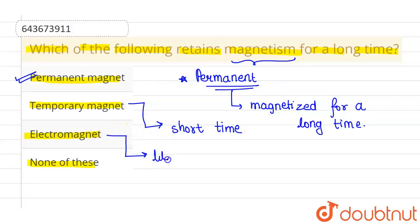will be magnets till the battery is not discharged, till the battery they are connected with is not discharged. As soon as the battery is discharged, they will be converted into simple rods. So this cannot be the answer.